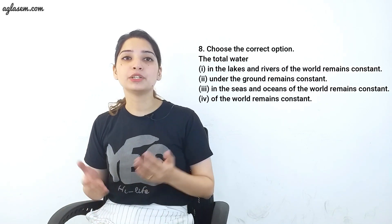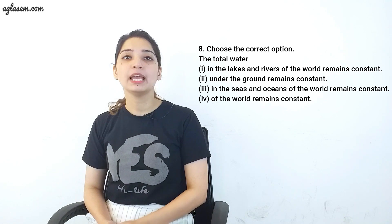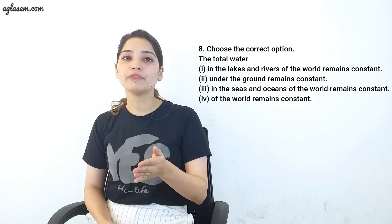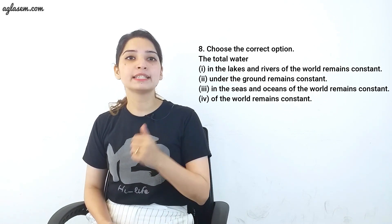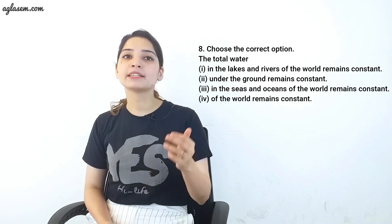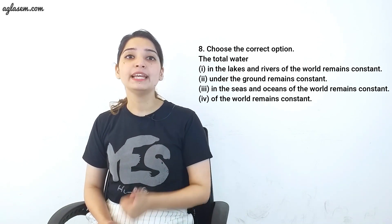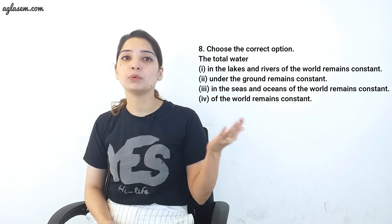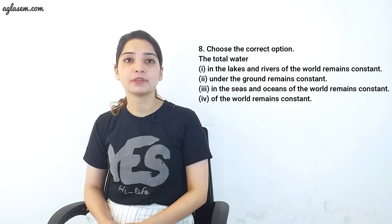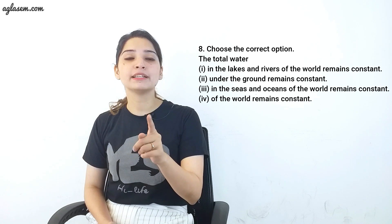Question 8: Choose the correct option. The total water — of the world — remains constant. The answer is: the total water of the seas and oceans of the world remains constant.